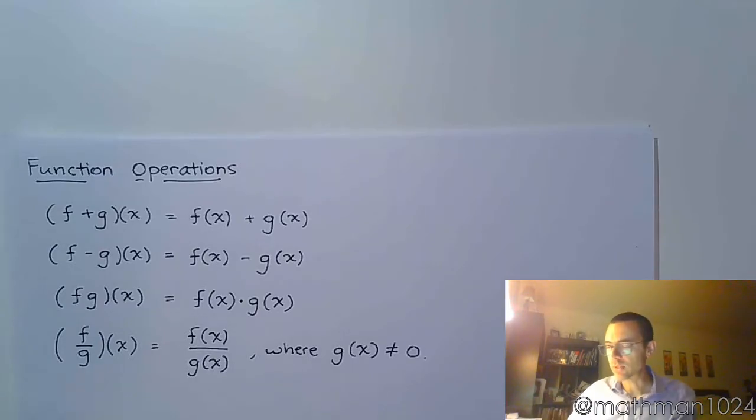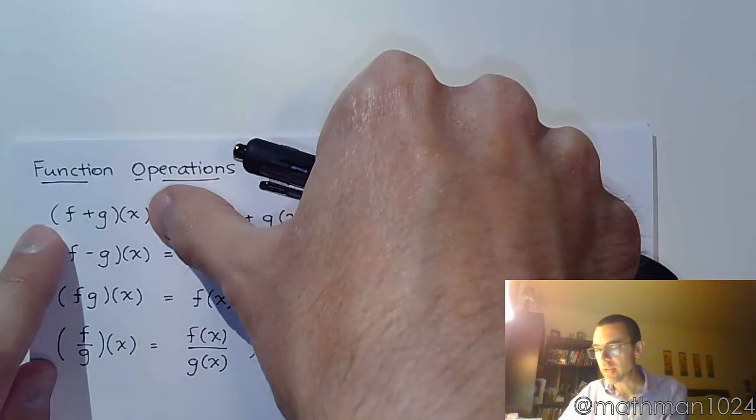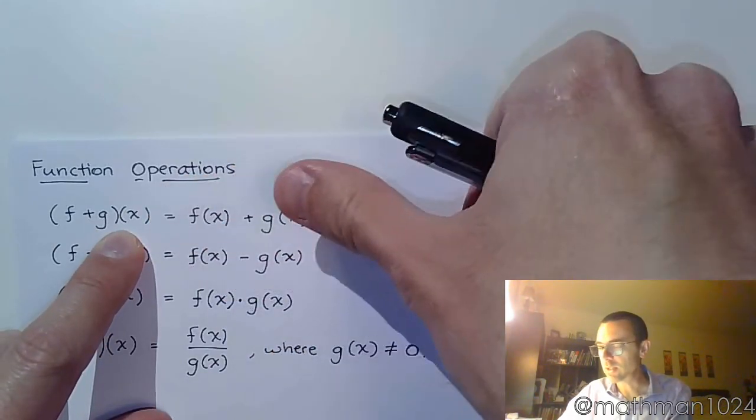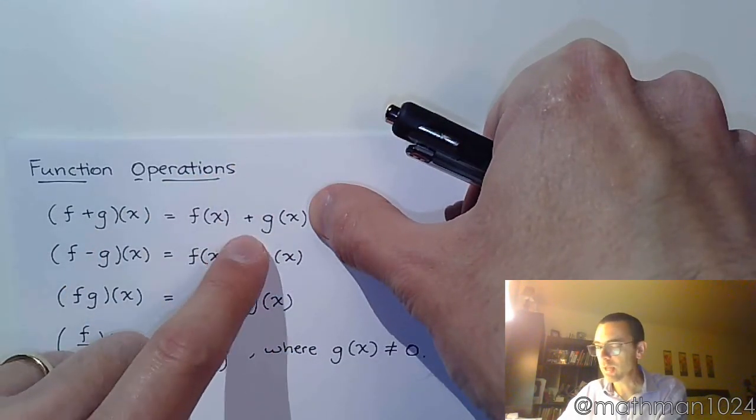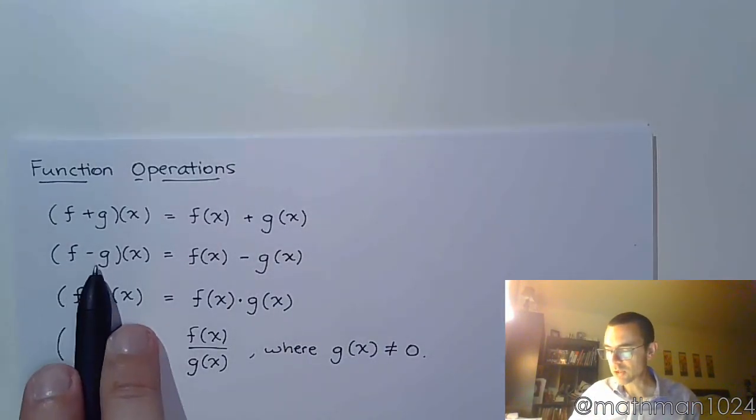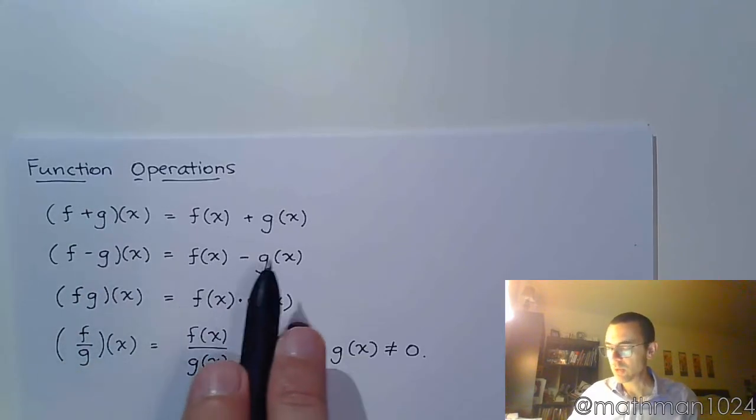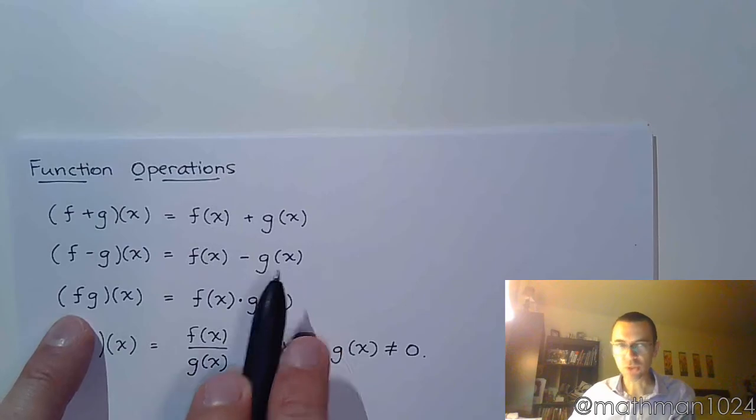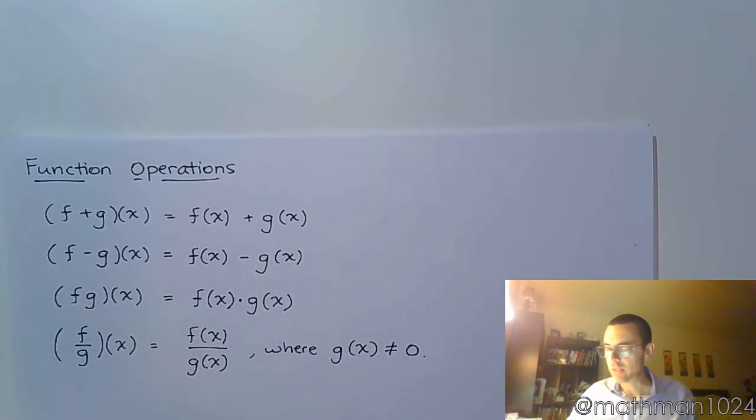You're going to see notation like this. You're going to see in parentheses (f + g)(x). The better way of seeing this is to understand that means f(x) + g(x). You see something very similar for everything else. If you see (f - g)(x), we split that up to say f(x) - g(x). And these guys stuck right next to each other indicates multiplication.